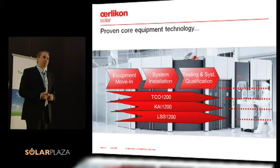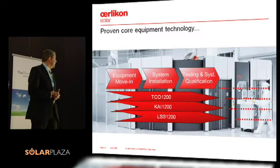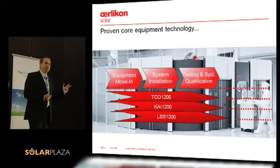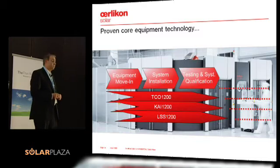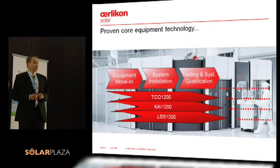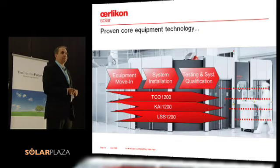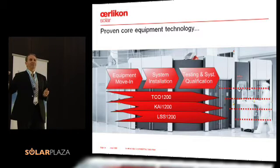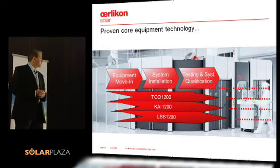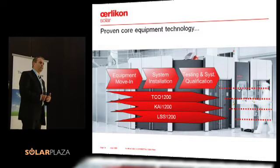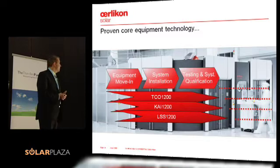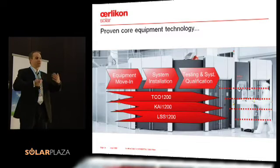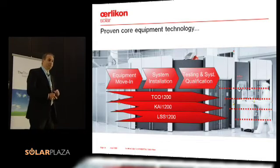What do you need? You need proven main equipment. For the front and back contact we use the TCO1200 equipment. You need best-in-class absorber material — we use the CHI-200 for that. And you need a best-in-class interconnector, so we have laser scribing with the LLS-1200. On the top side you see a timeline showing how it's done normally, as has been the case in other capital equipment applications like semiconductors and displays: you move in equipment, do system installation, testing, and system qualification. Normally it stops there and the customer takes over.